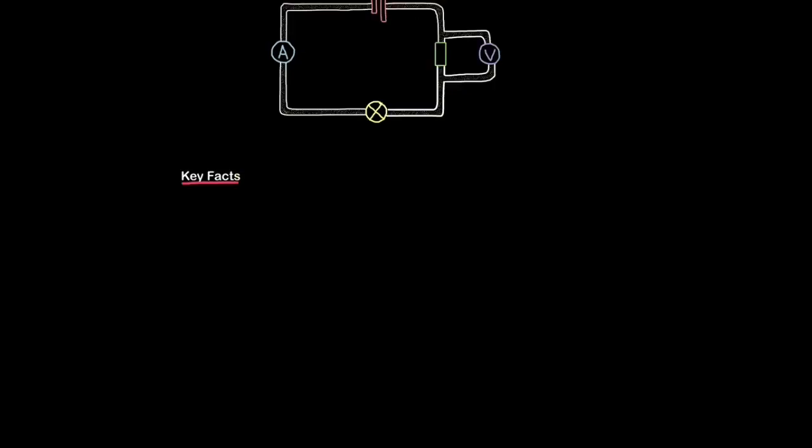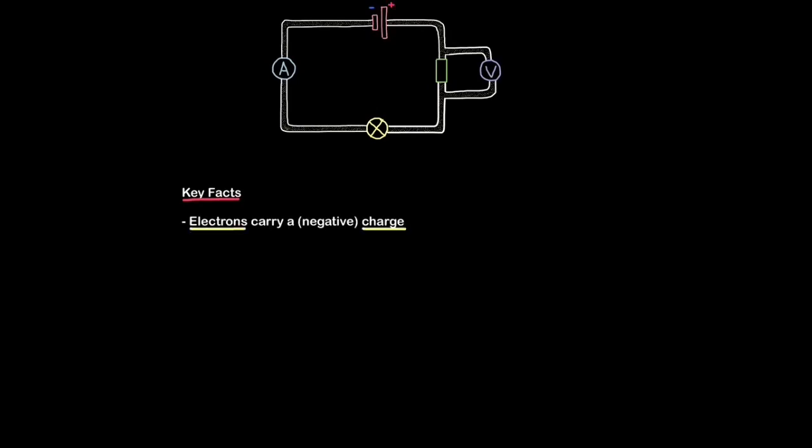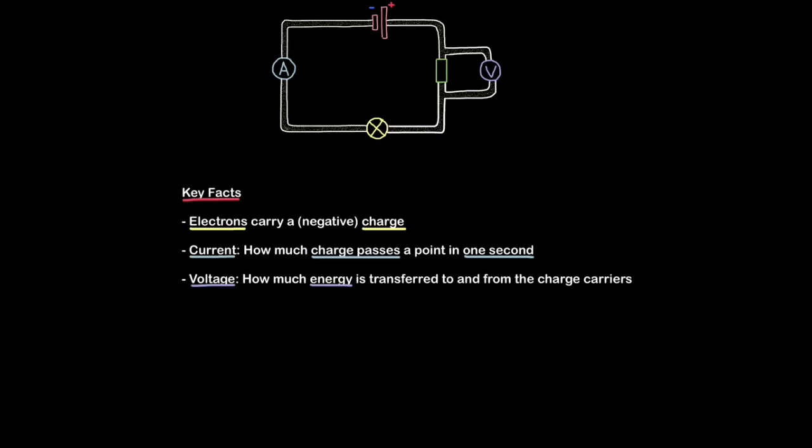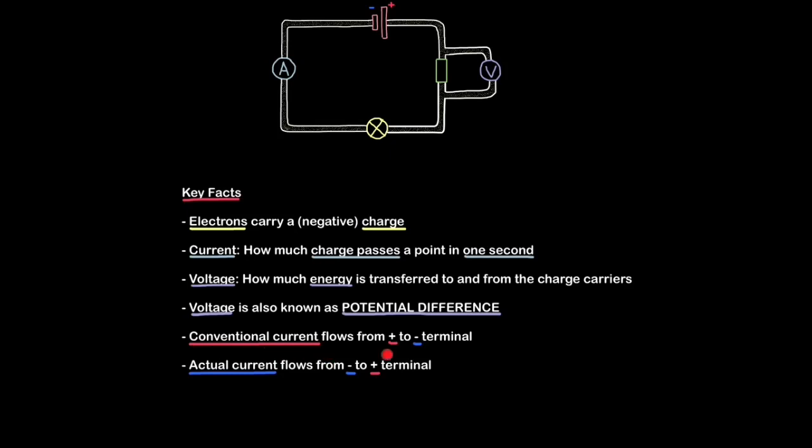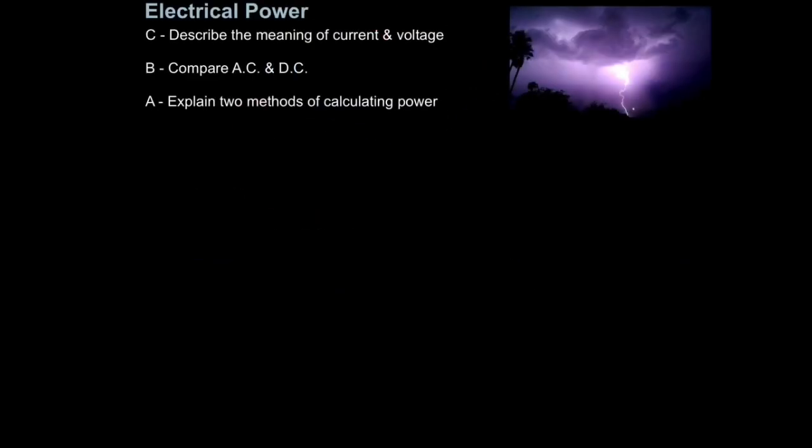So here are a few key facts to help you summarize what we've learned. Firstly, electrons carry a negative charge. Then current is how much charge passes a point in one second. So an ammeter literally counts how much charge passes in one second. Voltage is how much energy is transferred to and from the charge carriers, in other words the electrons. Voltage is also known as potential difference. And remember conventional current flows from positive to negative terminal. That's how we draw it but it's not how it actually is. And actual current flows from negative to positive terminal.